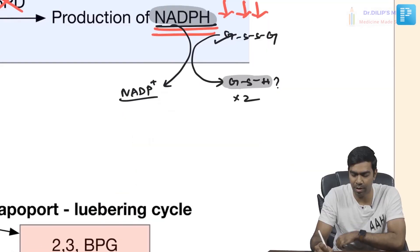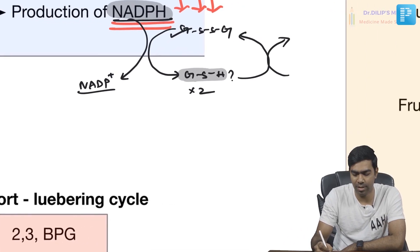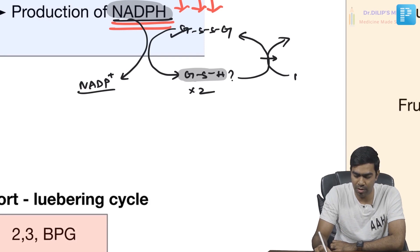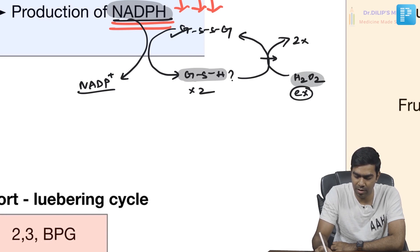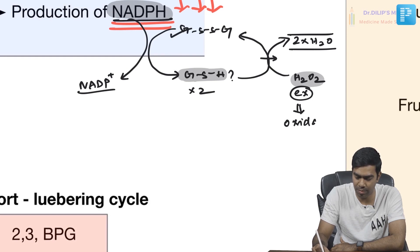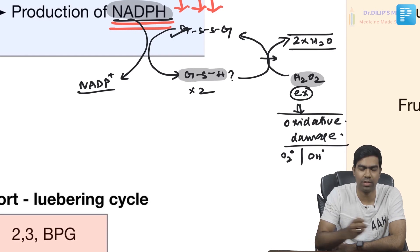Reduced glutathione neutralizes oxidizing compounds by pushing hydrogen onto them — for example, hydrogen peroxide is converted into harmless water molecules. If oxidant molecules like hydrogen peroxide are not reduced to neutral substances, they cause oxidative damage to cells, producing superoxide radicals and hydroxyl radicals.